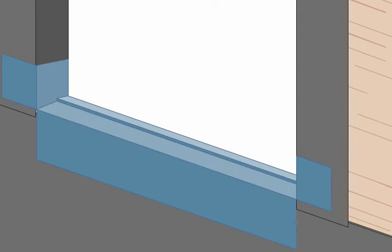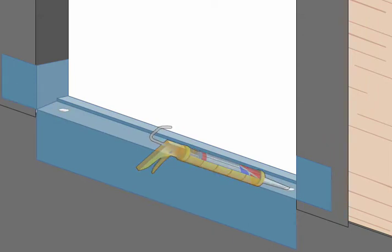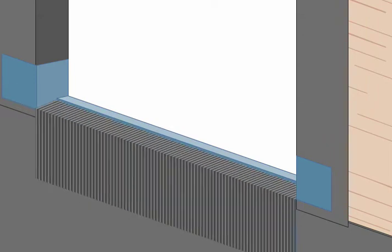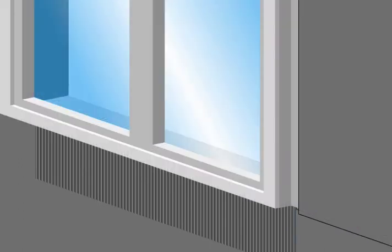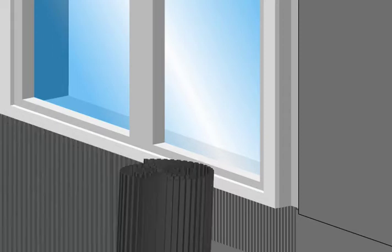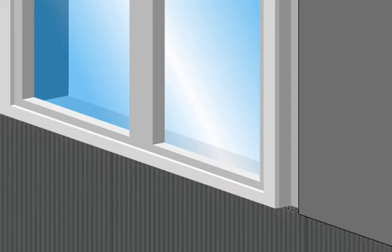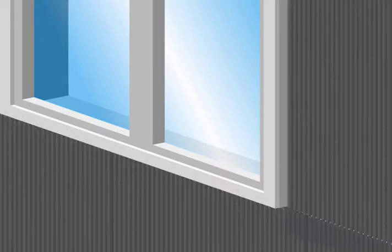The Window Drainage Plane is temporarily held in place with small dabs of Sikaflex on the slope-to-drain sub-sill. Then install and flash the window to manufacturer's specifications. Complete the system with one of MTI's Rain Screen Drainage Plane products.